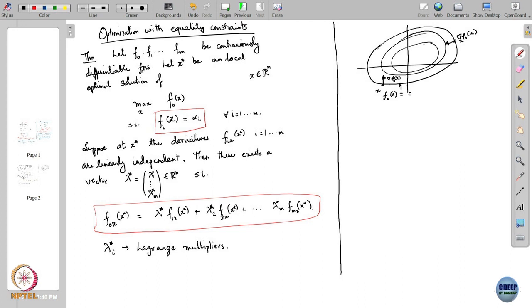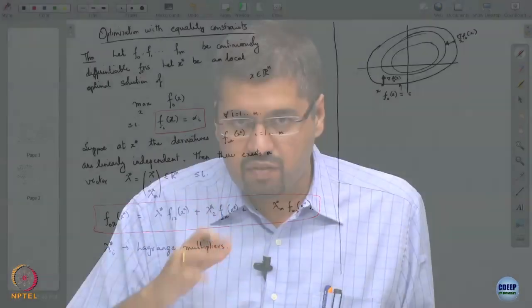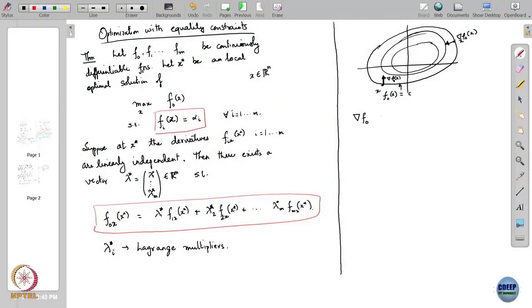Why is that? The contour comprises points where the function value is a constant. The derivative along these points — as you travel along the contour — should vanish. The rate of change of the function as you travel around the contour should vanish. What that means in Rⁿ is that the gradient itself must be orthogonal to the direction in which you are travelling while on the contour. So the gradient is always orthogonal to the contour.